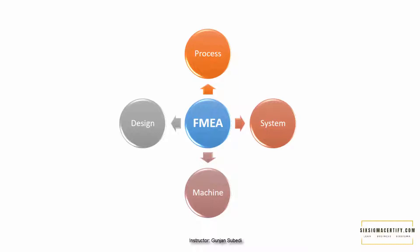For all these types of FMEA, our approach of dealing with the problem is the same. We proactively evaluate the process to identify the location, seriousness, and how failure may occur. We measure the impact of the failure and then identify those areas that are in greater need of change or improvement.